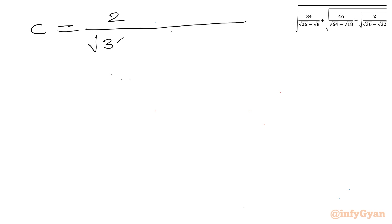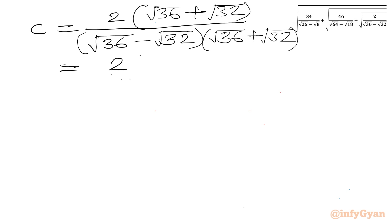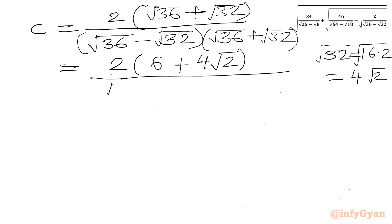Now the turn of C. So C equals 2 over (√36 minus √32). I multiply numerator and denominator by (√36 plus √32). So 2 times (6 plus 4√2) — since √32 = √(16×2) = 4√2 — over (√36)² minus (√32)².